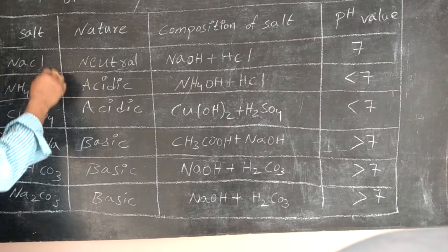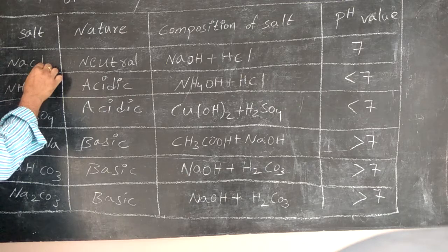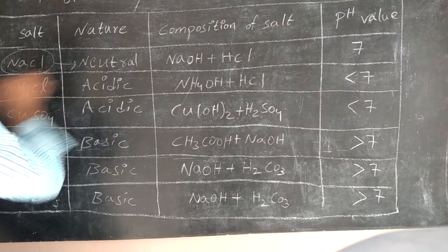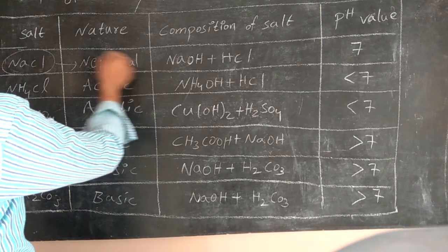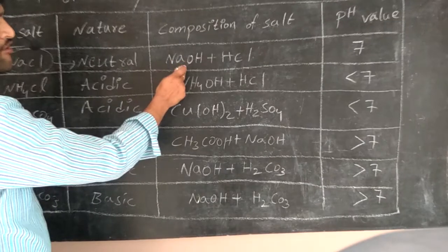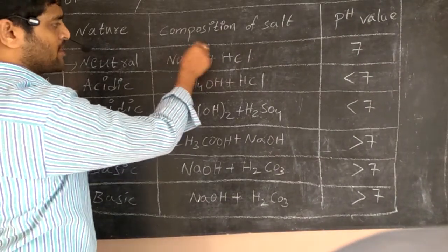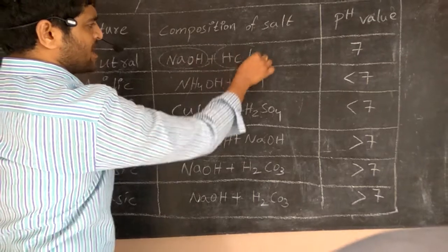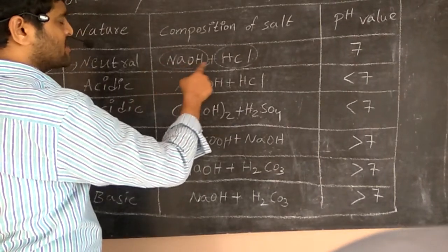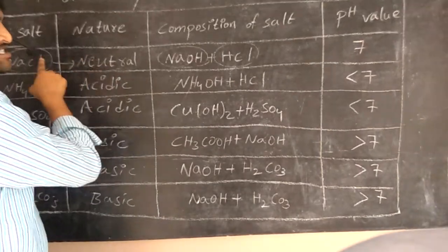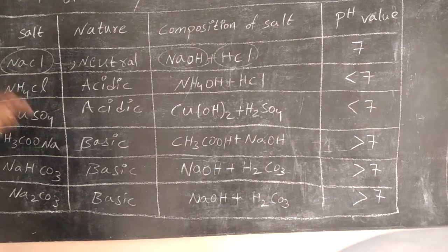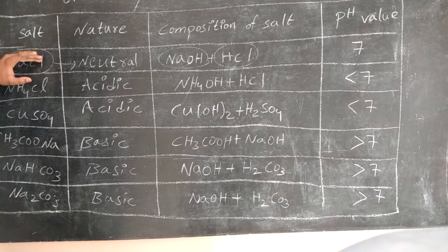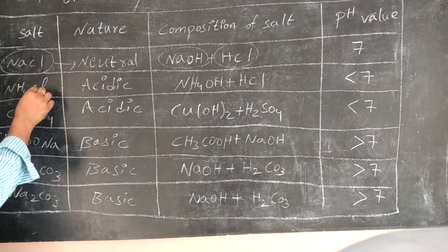Coming to the first one: salt NaCl. NaCl is called a neutral salt. Why? Because NaCl is formed by the combination of a strong base, sodium hydroxide, and a strong acid, hydrochloric acid. The resultant is a neutral salt. So the pH value of this salt is 7. Sodium chloride is the commonly used salt in our homes, easily available from the sea.